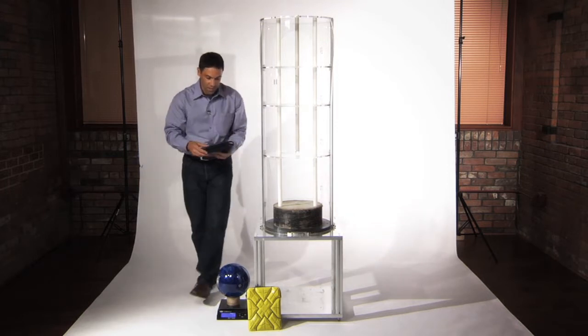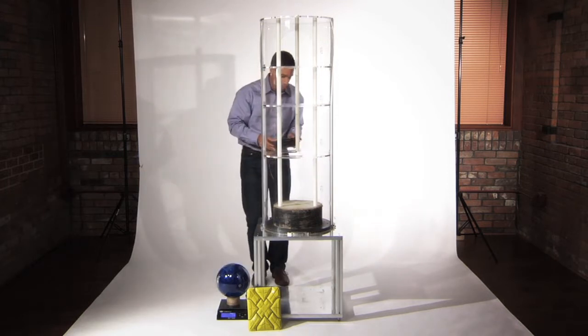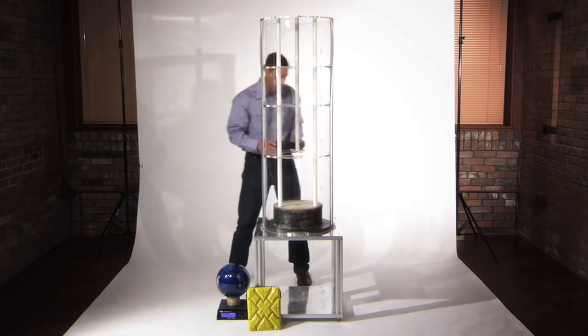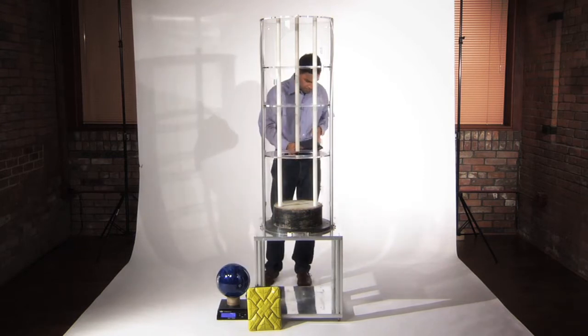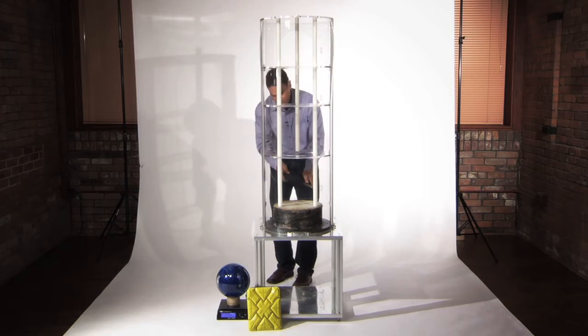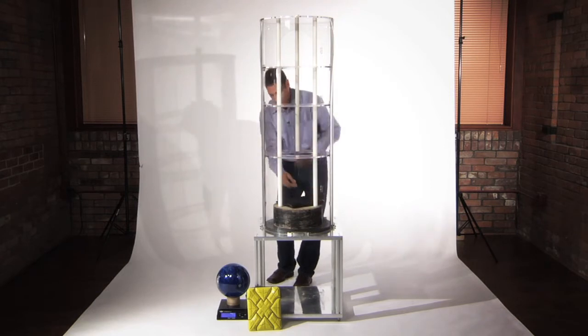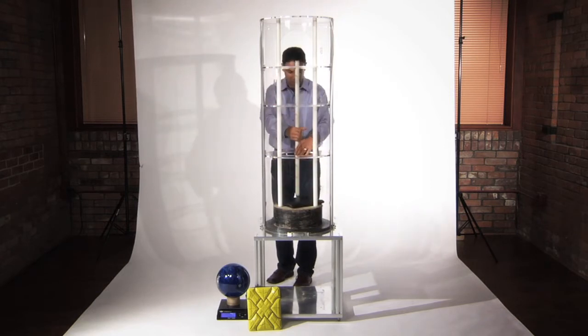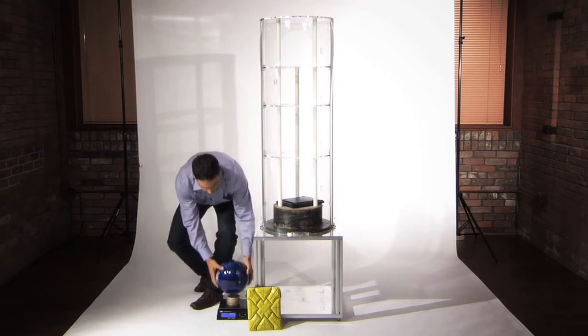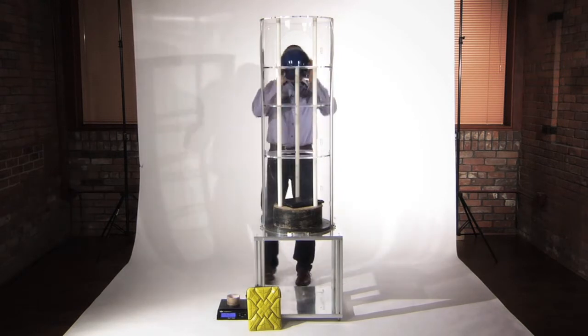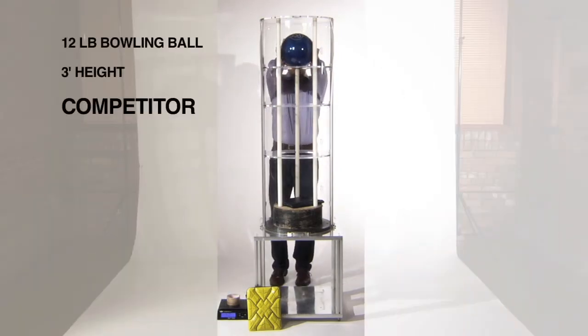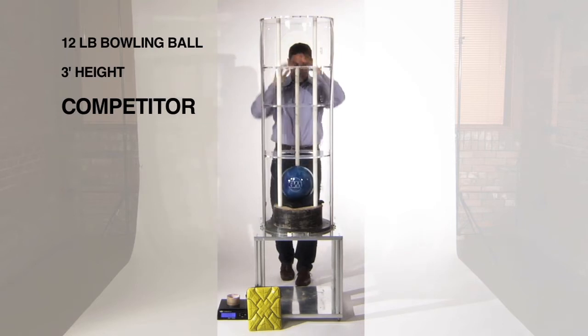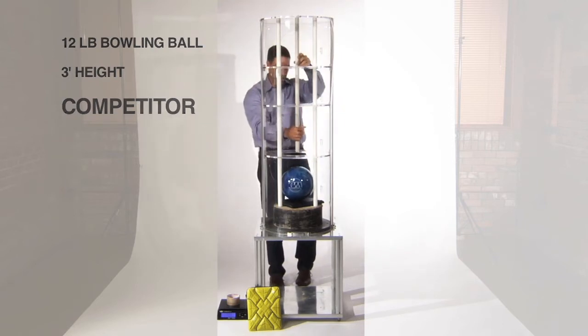To start with in this case, we're going to put the competitive hard shell case face up on a concrete slab and take the 12-pound bowling ball from a 3-foot height and see what the results are.